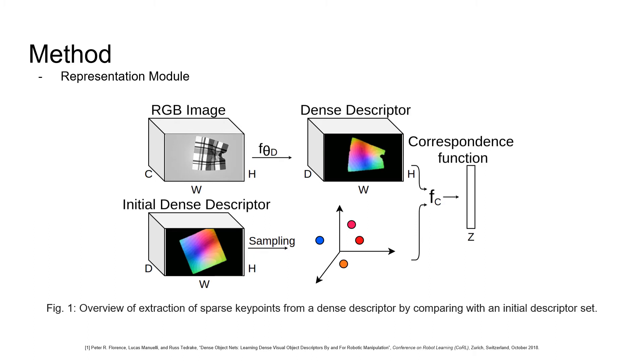Our second method uses dense descriptors based on representations trained by minimizing the distance between corresponding pixels and separating pixels which do not correspond. This representation is high dimensional and decreases sample efficiency for learning a policy. Hence, we sample a few points from the descriptor set by finding correspondences at every time step.